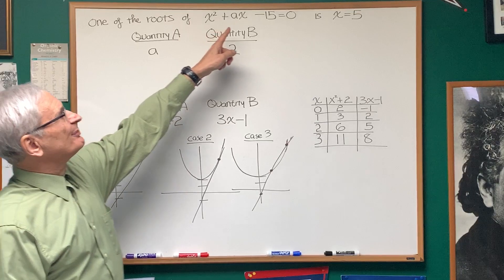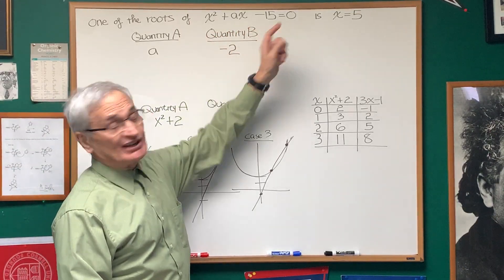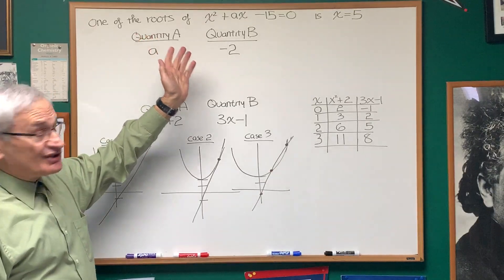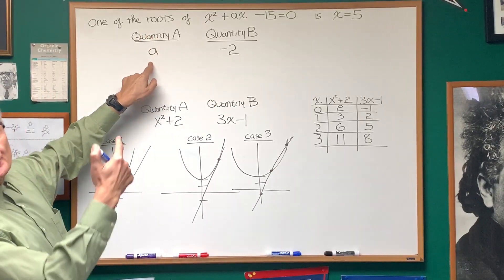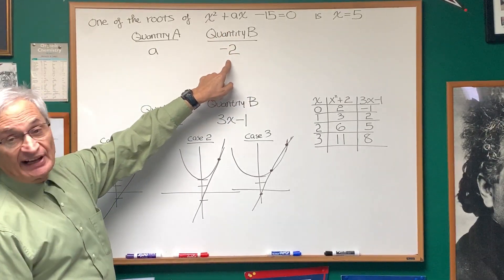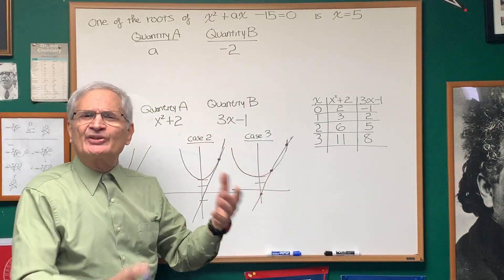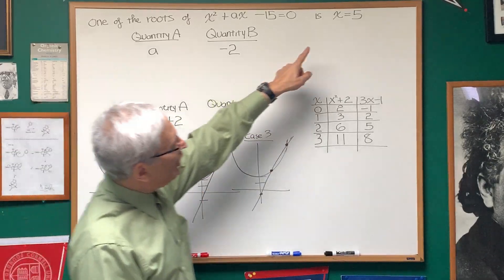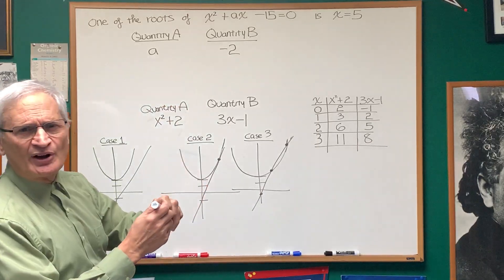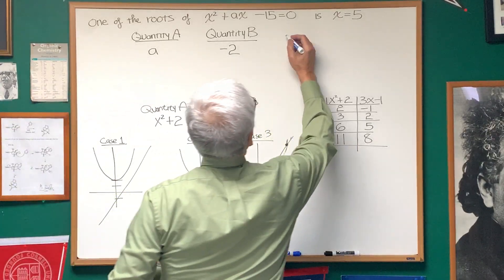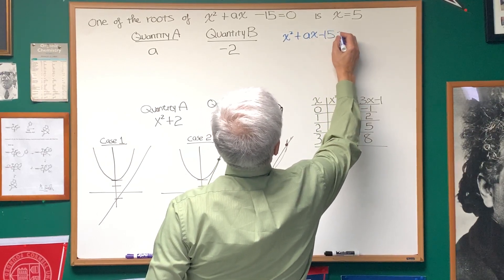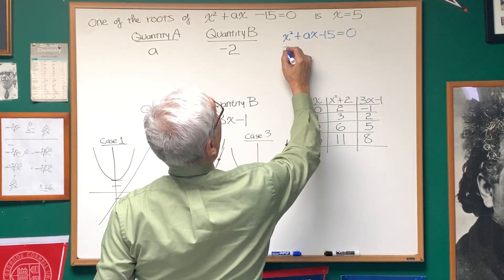Let's look at the first. One of the roots of x squared plus Ax minus 15 equals 0 is x equals 5. Which quantity is larger? Quantity A, which is A, the coefficient of the middle term here, or quantity B, negative 2. Well, how do we do this? The easiest way to do it, if we know one of the roots is x equals 5, let's just plug that into the quadratic that's given. So we have x squared plus Ax minus 15 equals 0.